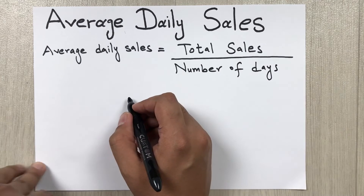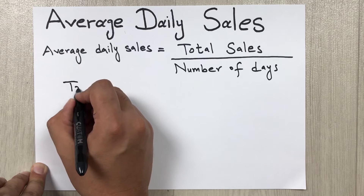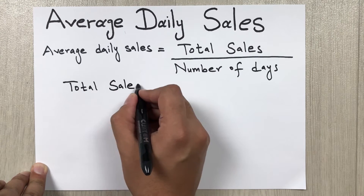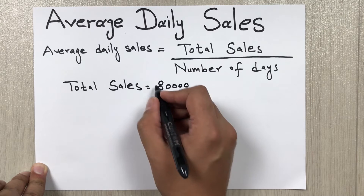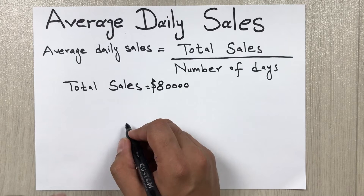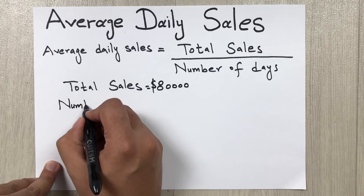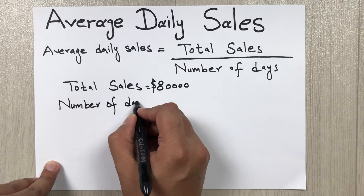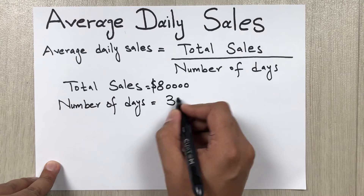Let's say the total sales is $80,000, so total sales is equal to $80,000. And the number of days is equal to, let's say, 365.